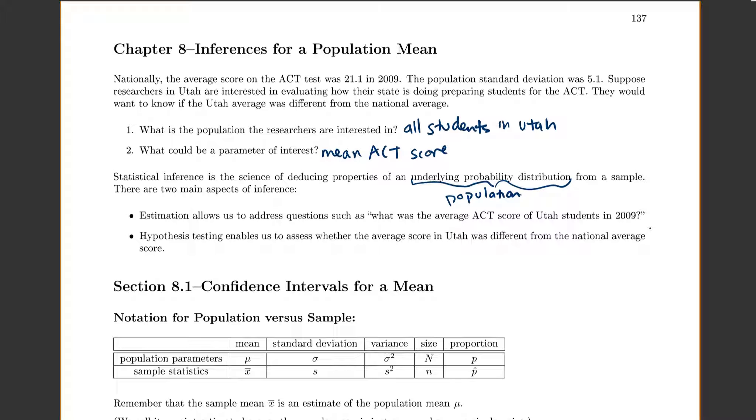There are two main ways that you can do this. The first one is estimation, meaning confidence intervals. And it allows us to address questions such as, what was your average ACT score for all the Utah students in 2009? Now hypothesis testing is going to allow us to say whether or not that average score was different from the national average score. So in section 8.1 we'll do confidence intervals, section 8.2 we'll do hypothesis testing.